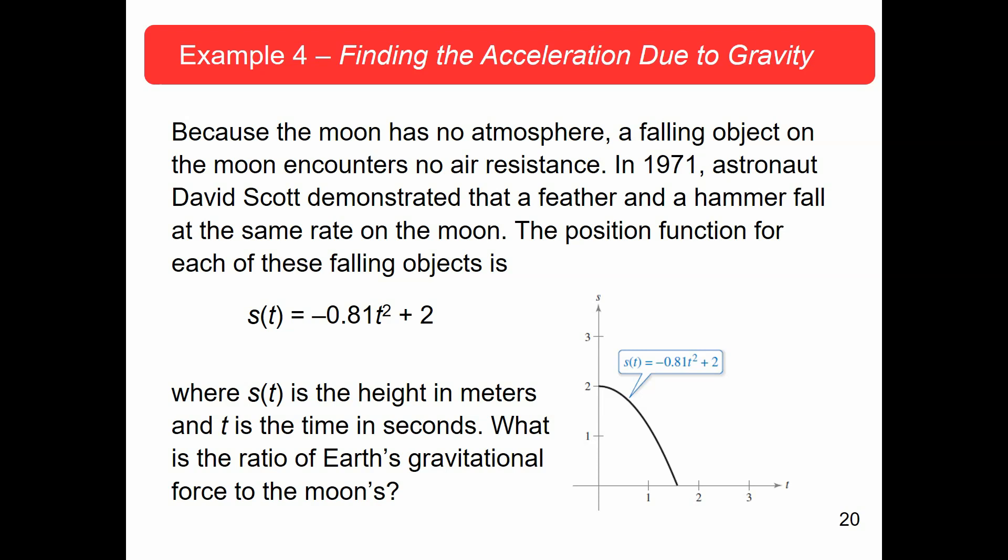But with no air resistance on the moon or if you've ever seen the vacuum experiments where they put the stuff in a vacuum and flip it upside down and they fall, it's because there's no air resistance. So, the position function for these falling objects can be given by negative 0.81t squared plus 2. In this case, s is the height in meters and t is the time in seconds. Now, the question I want to know is what is the ratio of Earth's gravitational force to the moons?